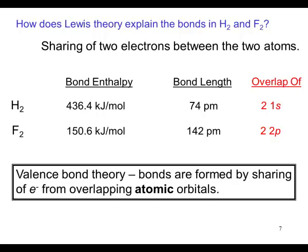Hydrogen has a bond enthalpy of 436, a bond length of 74, and the hydrogen H2 molecule is the result of an overlap between two 1s orbitals.